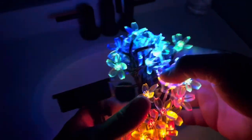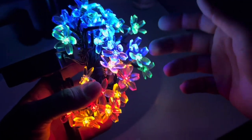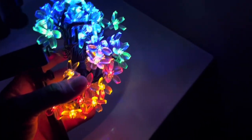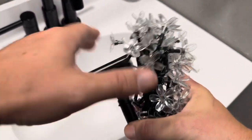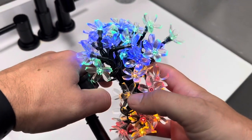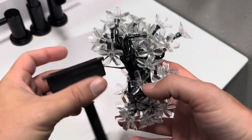Now one thing about these that I did want to mention is that these are actually only dusk to dawn lights. So I'm going to turn on the light in here real fast. And you can see that they did go off because of the light. Now if I were to take and cover this up you can see they come back on because it thinks that it's dark. So that's really cool.